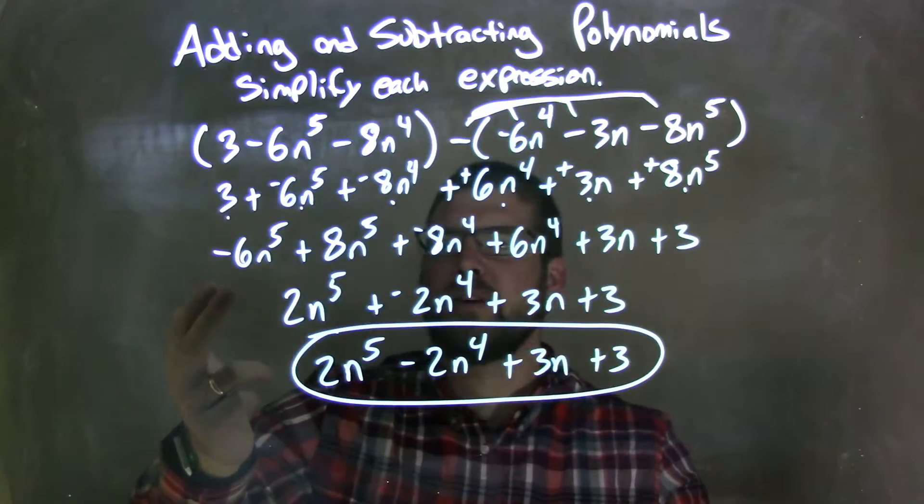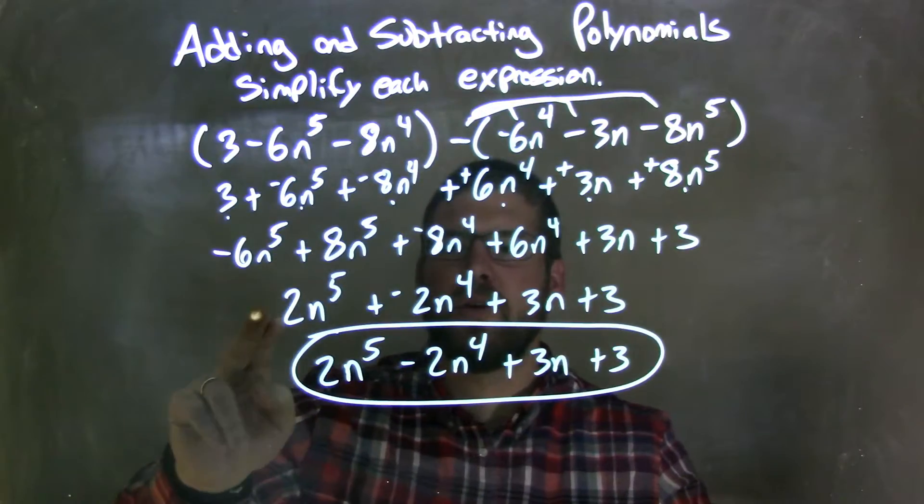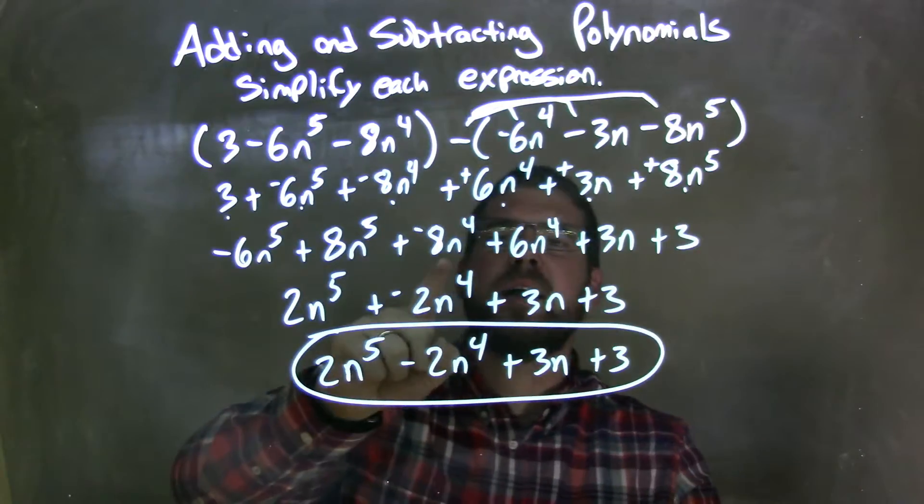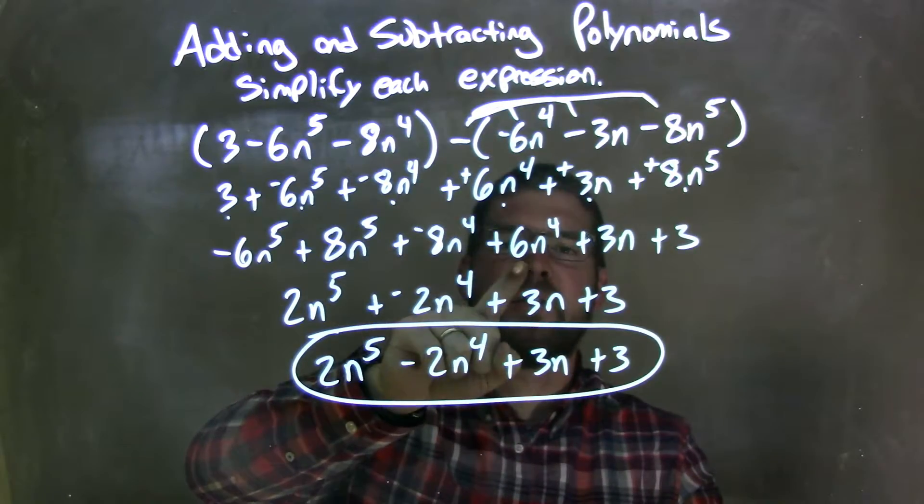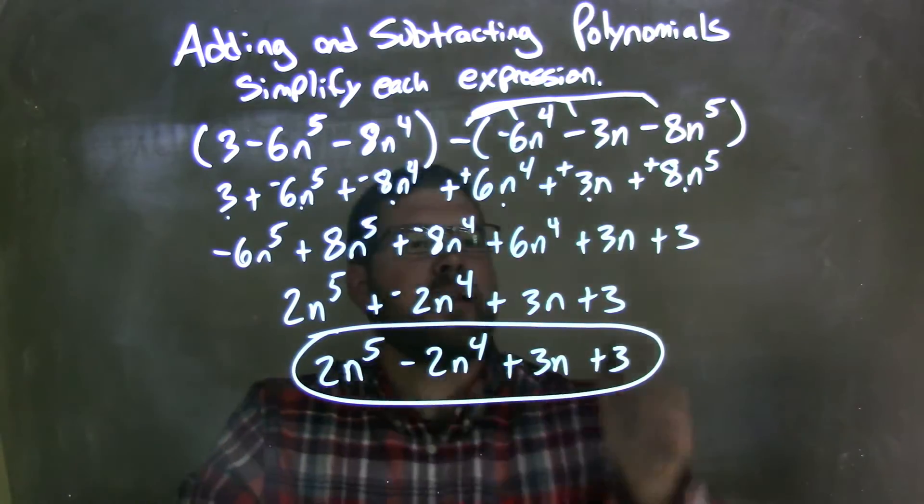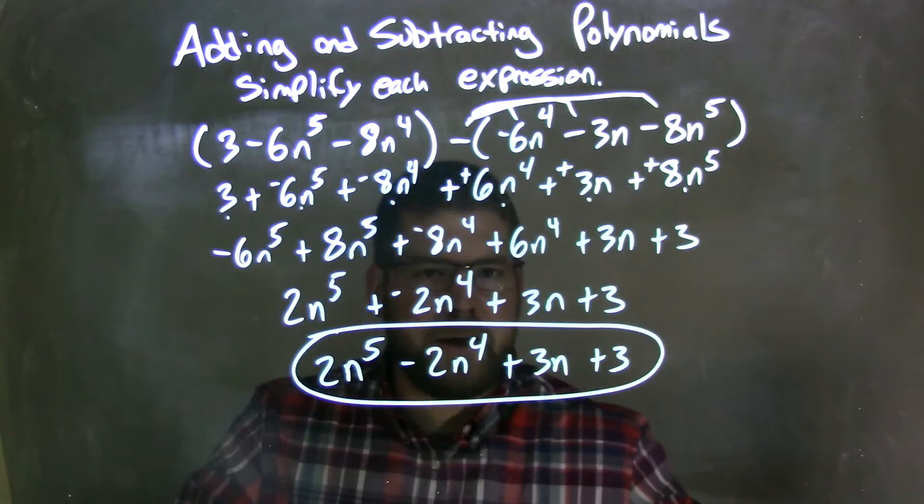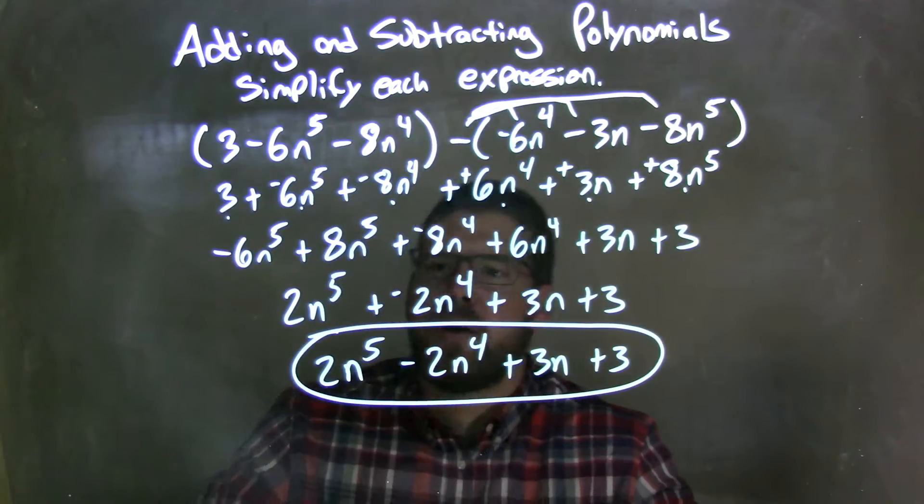Now I simplified. Negative 6n to the 5th plus 8n to the 5th was 2n to the 5th, positive 2n. Negative 8n to the 4th plus 6n to the 4th is negative 2n to the 4th. Then the 3n came down and the 3 came down.